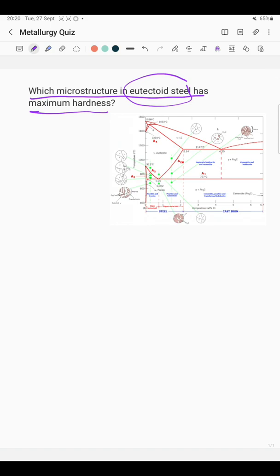The first one is hypoeutectoid steel, which contains carbon content from 0.02 to 0.76 percent. The second one is eutectoid steel, which contains 0.76 percent carbon. So this is what eutectoid steel is.